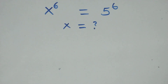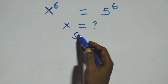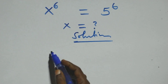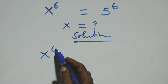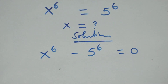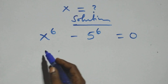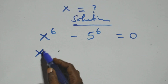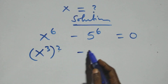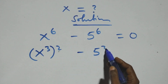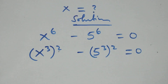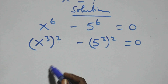Hello, you're welcome. Here we solve a nice exponential equation. We take 5 raised to power 6 to the left hand side, giving us x raised to power 6 minus 5 raised to power 6 equals zero. We can write this as x raised to power 3 all squared minus 5 raised to power 3 all squared equals zero.